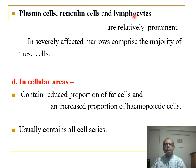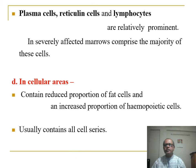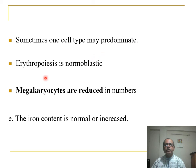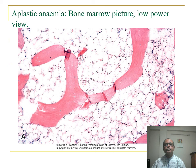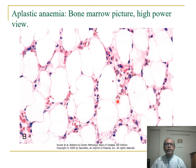In severely affected areas, these cells comprise the majority. Cellular areas contain a reduced proportion of fat cells and increased hemopoietic cells, sometimes with one cell type predominating. Erythropoiesis is normoblastic but megakaryopoiesis is reduced in number. Iron content is normal or increased. In the bone marrow picture — low power view shows reduced cellular elements with fat cells in empty spaces; in high power view, hemopoietic cells are present between fat cells.